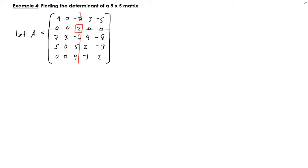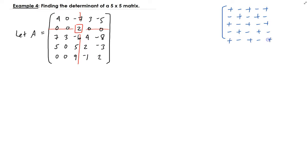Starting with this value, let's recall the sign conventions. For a five by five matrix we have plus, minus, plus, minus, plus, plus, minus, and so on. We start with the value 2, so for that particular cofactor we're going to use minus two.